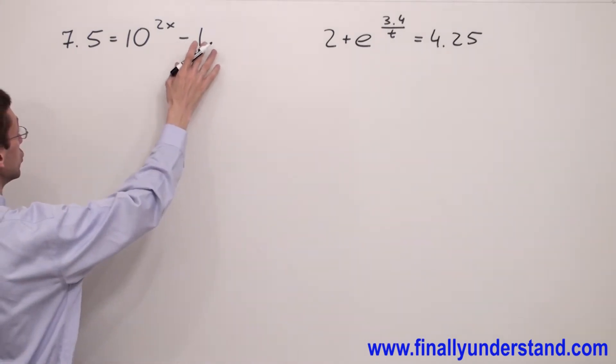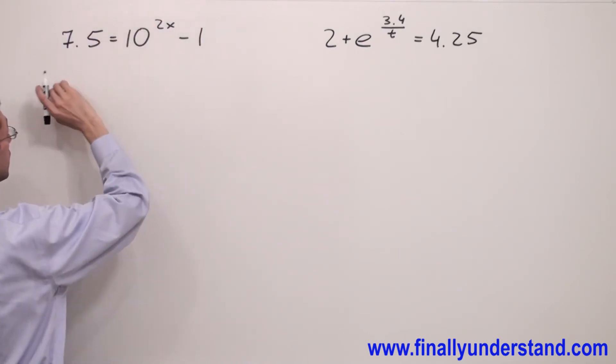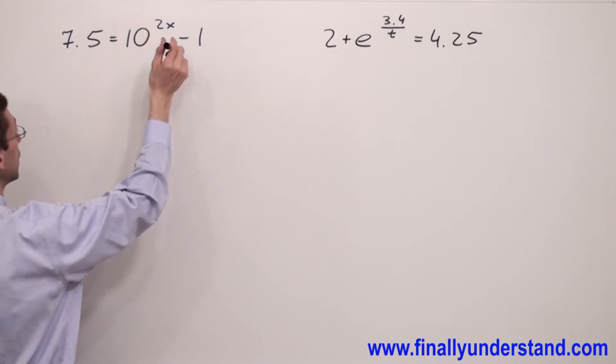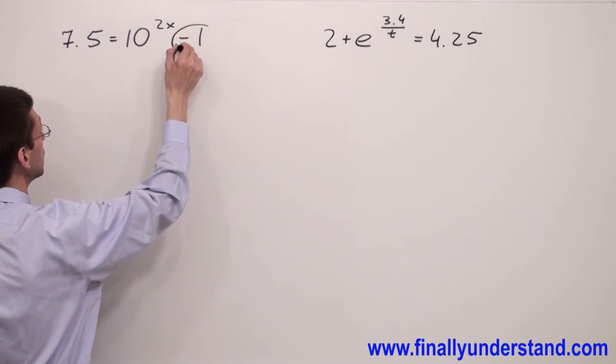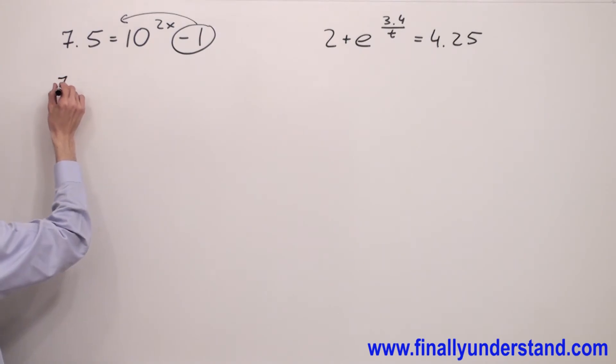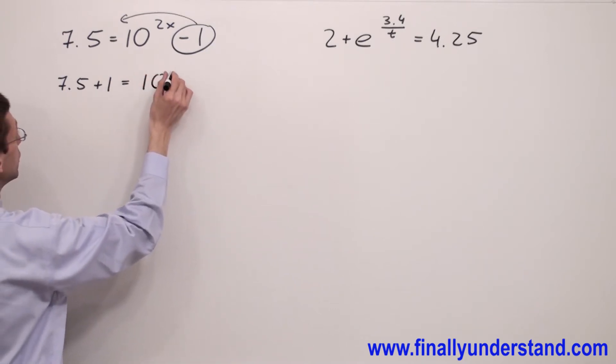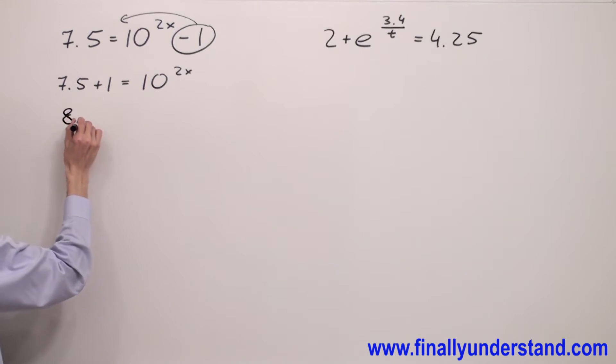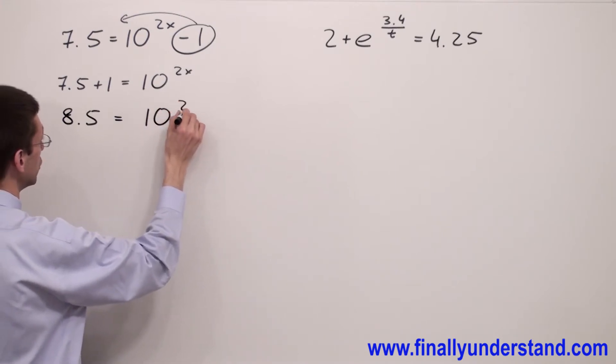Because negative 1 has no x to itself, you're supposed to take this negative 1 and move to the left side and make sure that only terms with x are going to stay on the right. So move it to the left. We will have 7.5 plus 1 equals 10 to the 2x. 7.5 plus 1 is 8.5. This is equal 10 to the power of 2x.